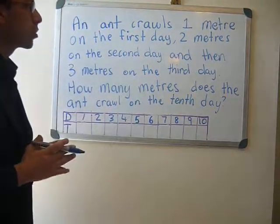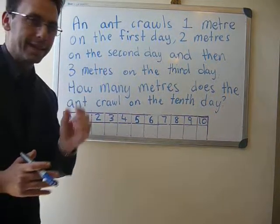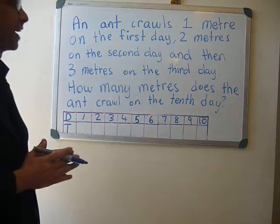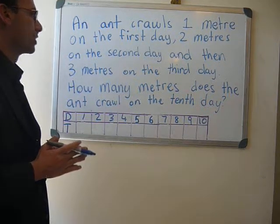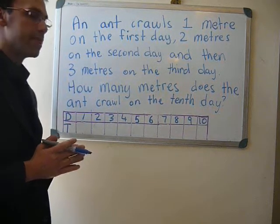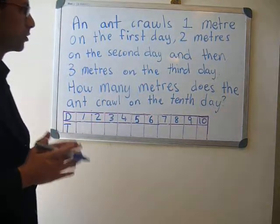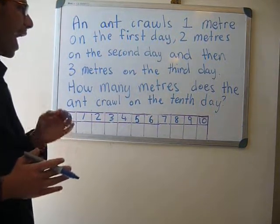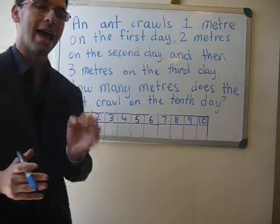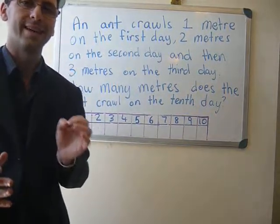An ant crawls one metre on the first day, two metres on the second day, and then three metres on the third day. How many metres does the ant crawl on the tenth day?